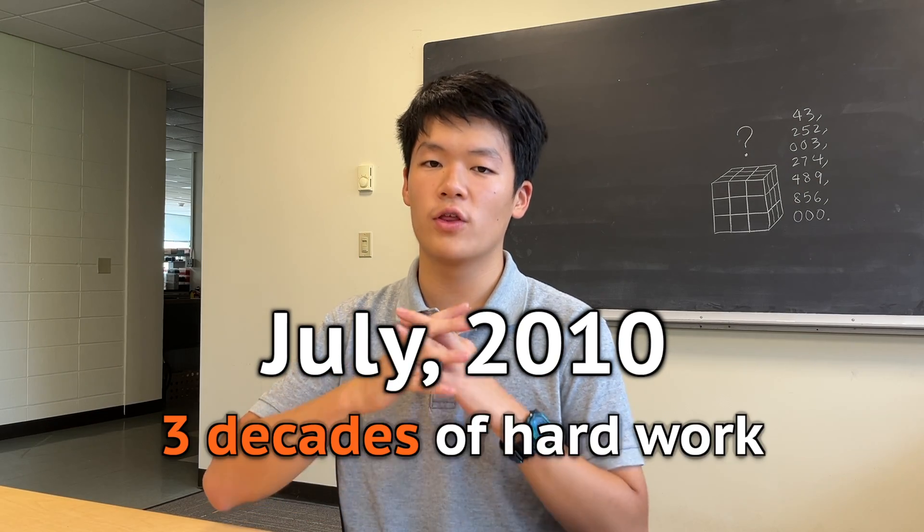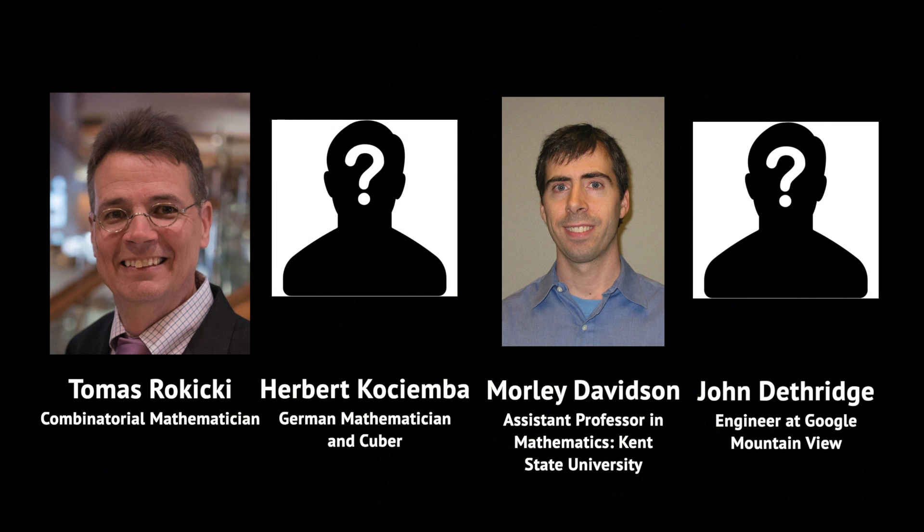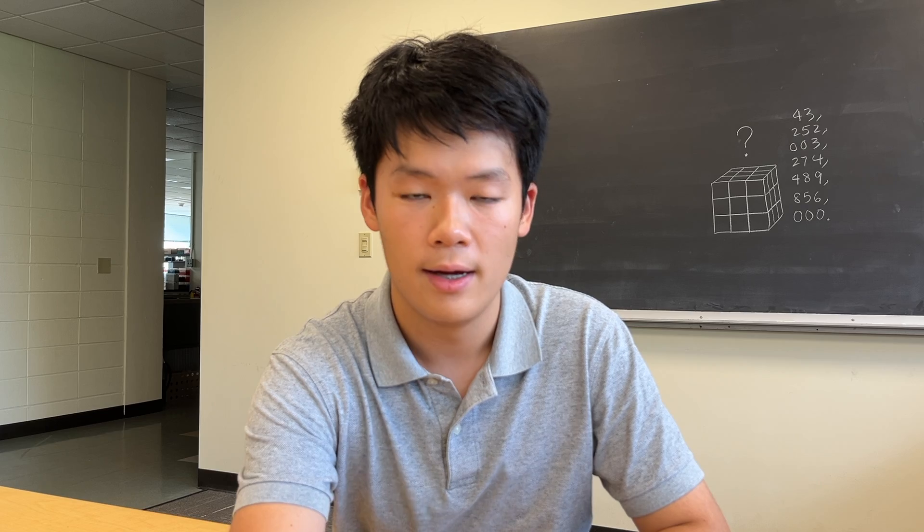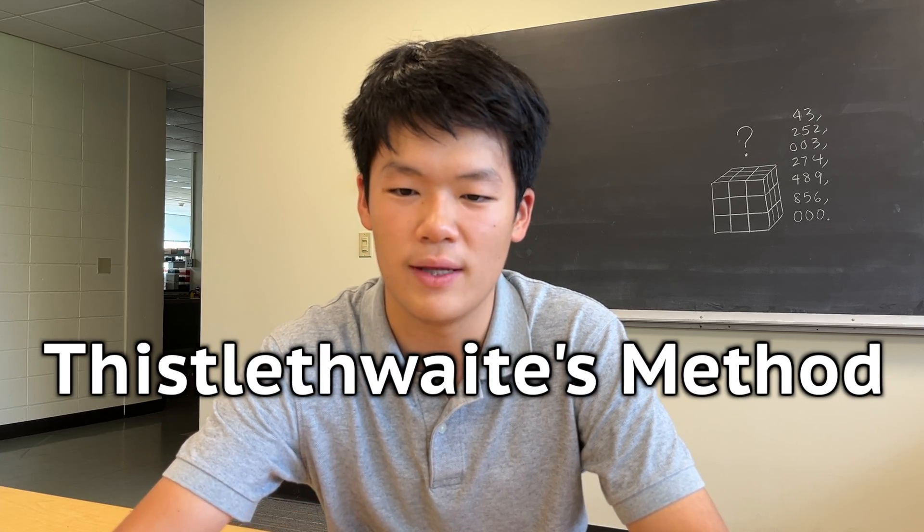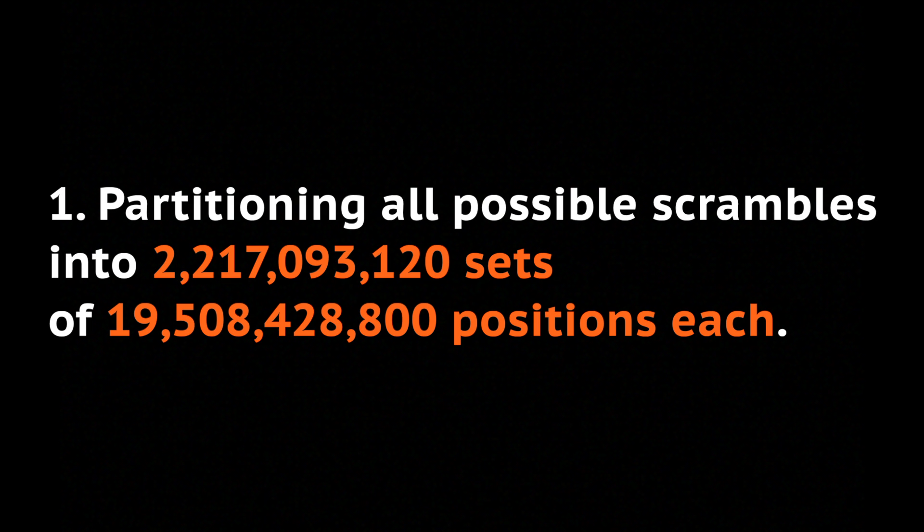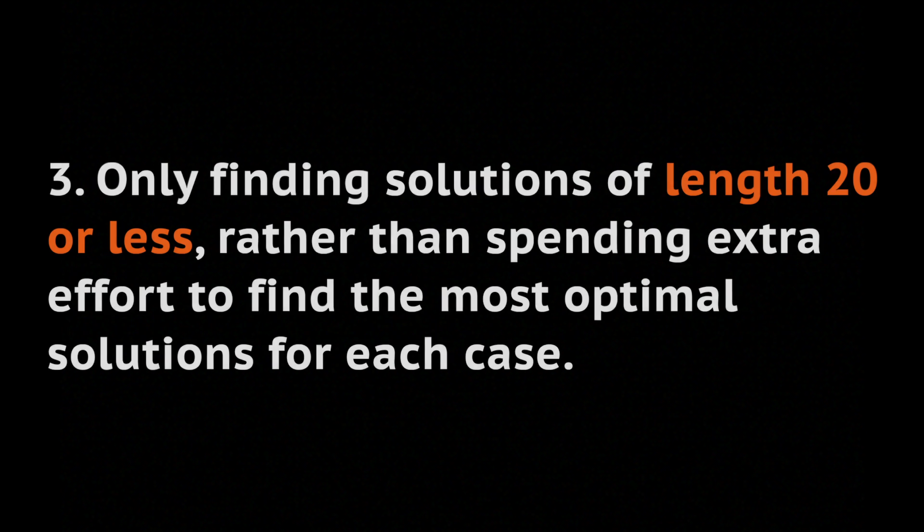In July of 2010, after three decades of hard work, we've finally done it. A group of four mathematicians, namely Tomas Rokicki, Herbert Kociemba, Morley Davidson, and John Dethridge, lowered the upper bound one final time to 20, matching the lower bound of God's number. The fundamental principle behind this method was built upon Thistlethwaite's method and Kociemba's algorithm from almost 30 years back. Here God's number was pinpointed by first, partitioning all possible scrambles into 2 billion sets of 19 billion positions each. Then, reducing the number of sets that needed to be checked to 55 million using symmetry and set covering. Lastly, they only found solutions of length 20 or less, rather than spending extra effort to find the most optimal solutions for each case.